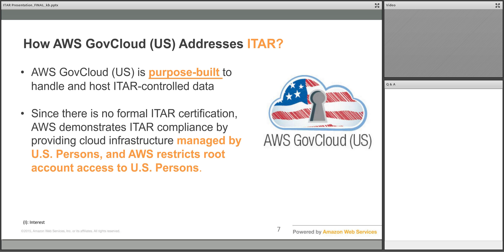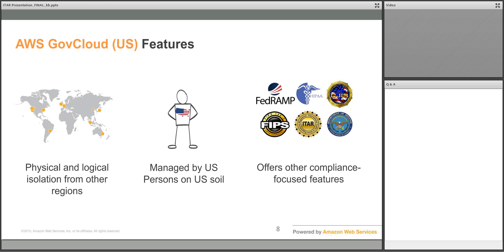In addition to meeting ITAR requirements, AWS GovCloud is also continuously audited by the Federal Risk and Authorization Management Program by an independent third-party assessor, and has been issued a FedRAMP-High Joint Authorization Board, or JAB, Provisional Authority to Operate, or ATO. The key features of the AWS GovCloud US Region include the fact that GovCloud is physically and logically isolated from all other AWS regions, including other US regions. The region is managed and operated by AWS personnel that are US citizens located on US soil, and GovCloud offers other compliance-related features beyond ITAR compliance, including but not limited to FedRAMP, DOD-SRG, SEVIS, and HIPAA.